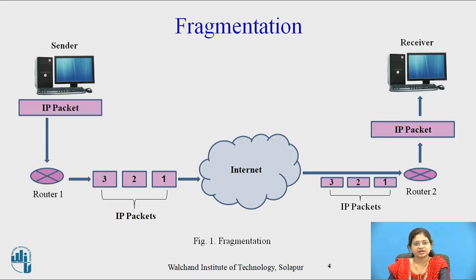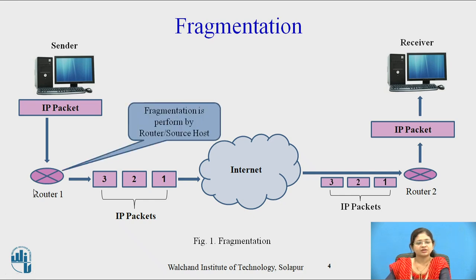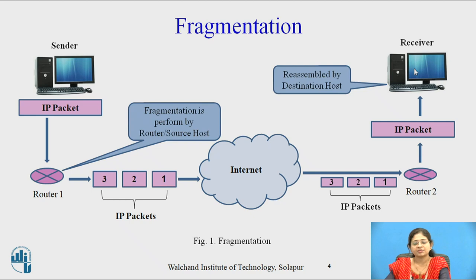In this diagram there is a sender and receiver. The sender sends an IP packet to a router. The router receives it and decides whether to fragment or not. The IP packet is fragmented into three IP packets. These three IP packets travel through the internet and are received by Router 2. Router 2 forwards them to the receiver. The router or source host can fragment IP packets, but on the receiver side, only the destination host can reassemble the packets.